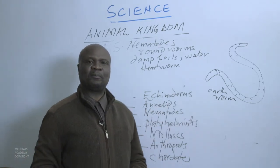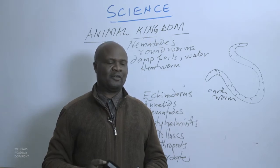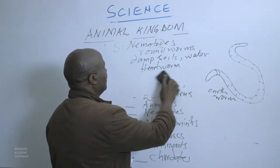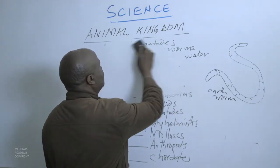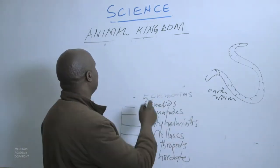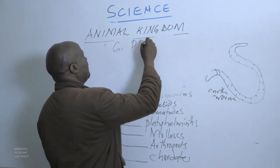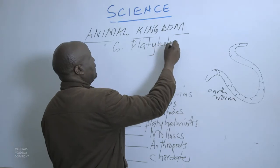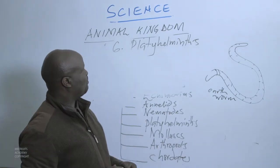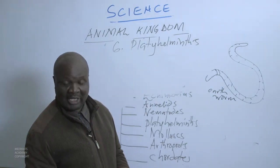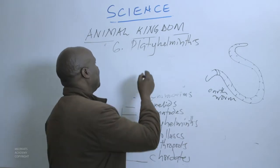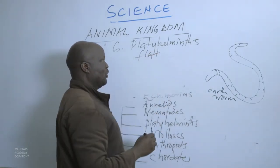We shall go to the sixth phylum, called Platyhelminthes. These are animals which are flat but have their own unique characteristics. Platyhelminthes are flat worms — they are worms, but they are flat, not round.